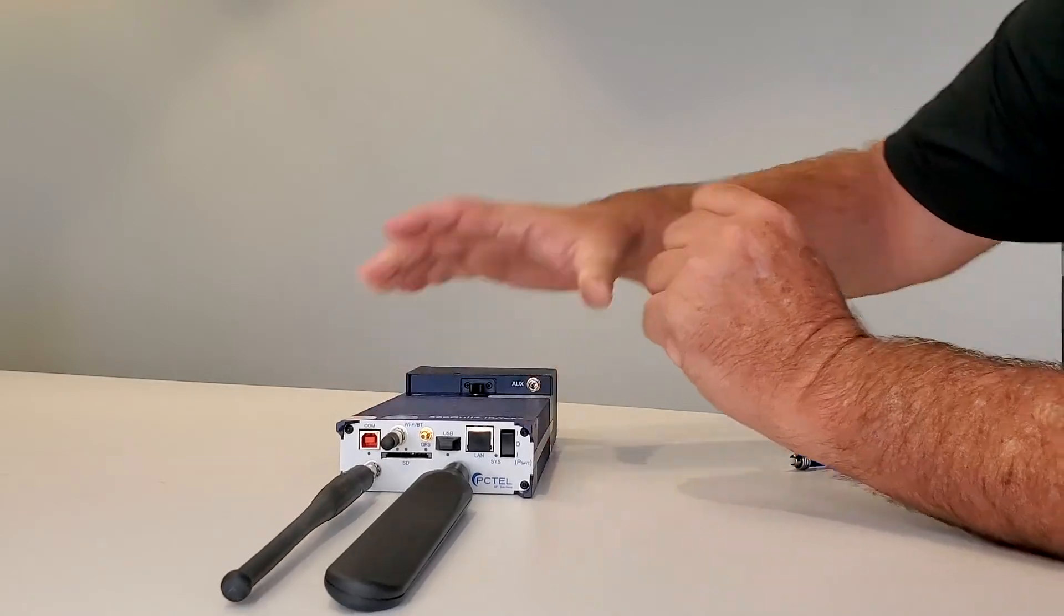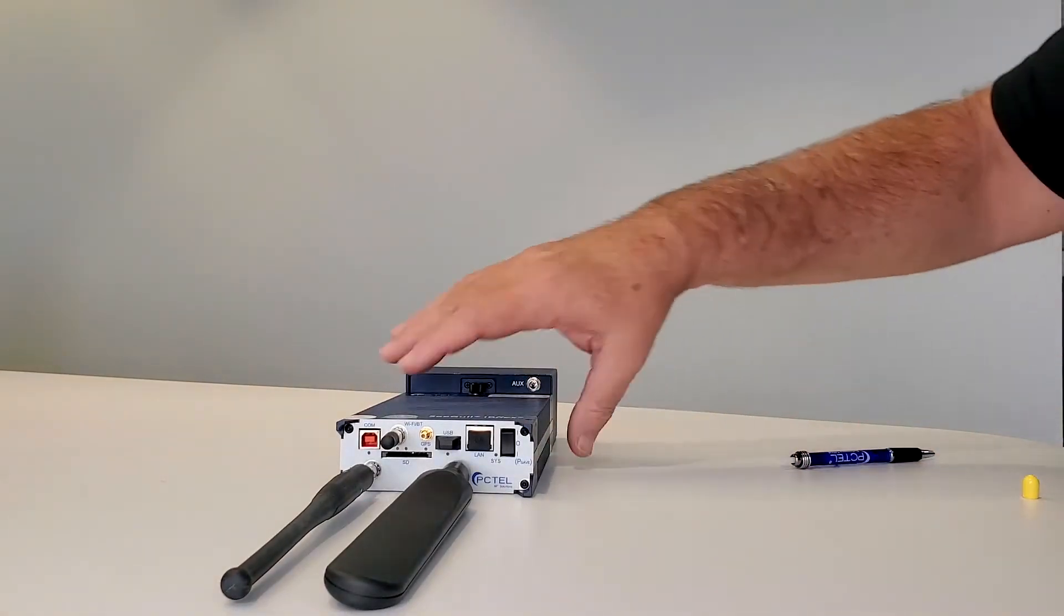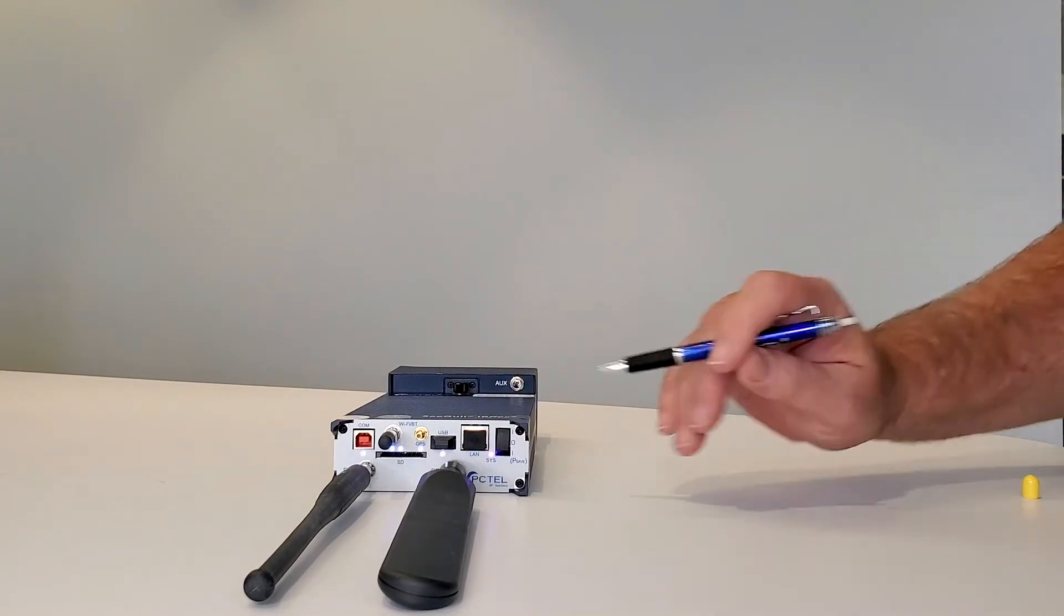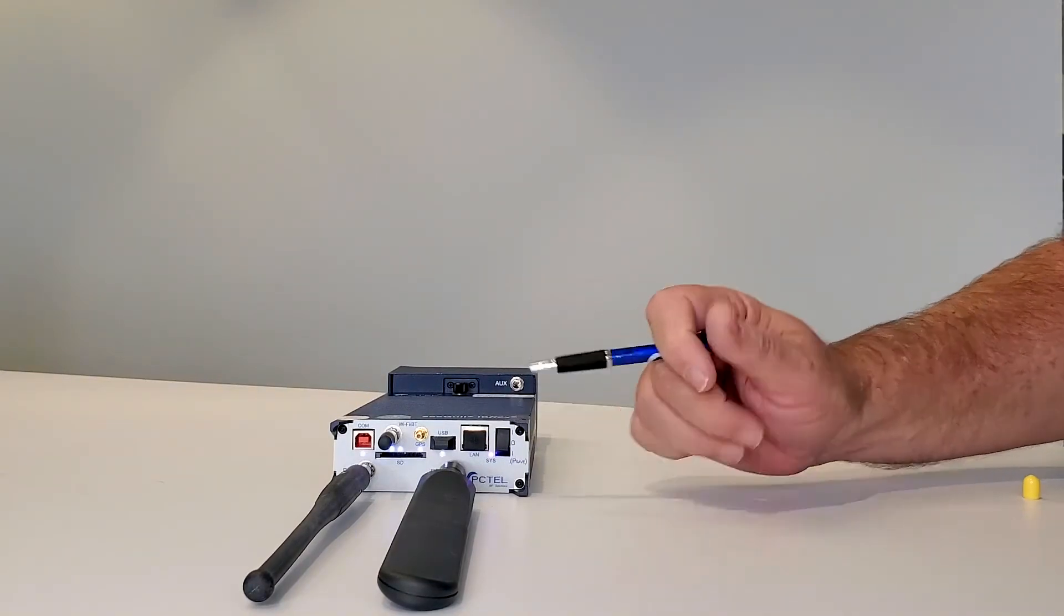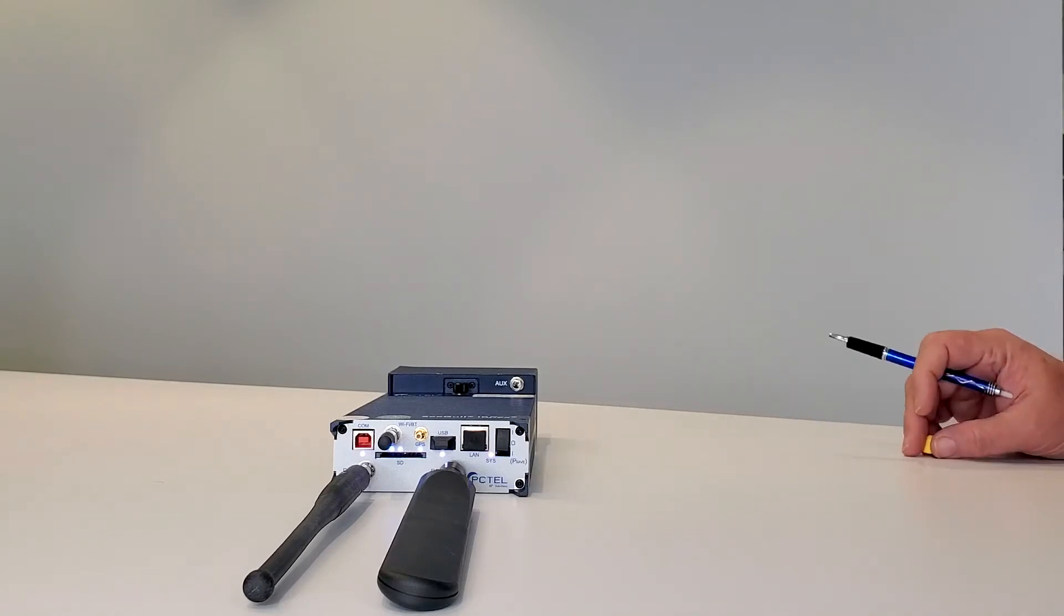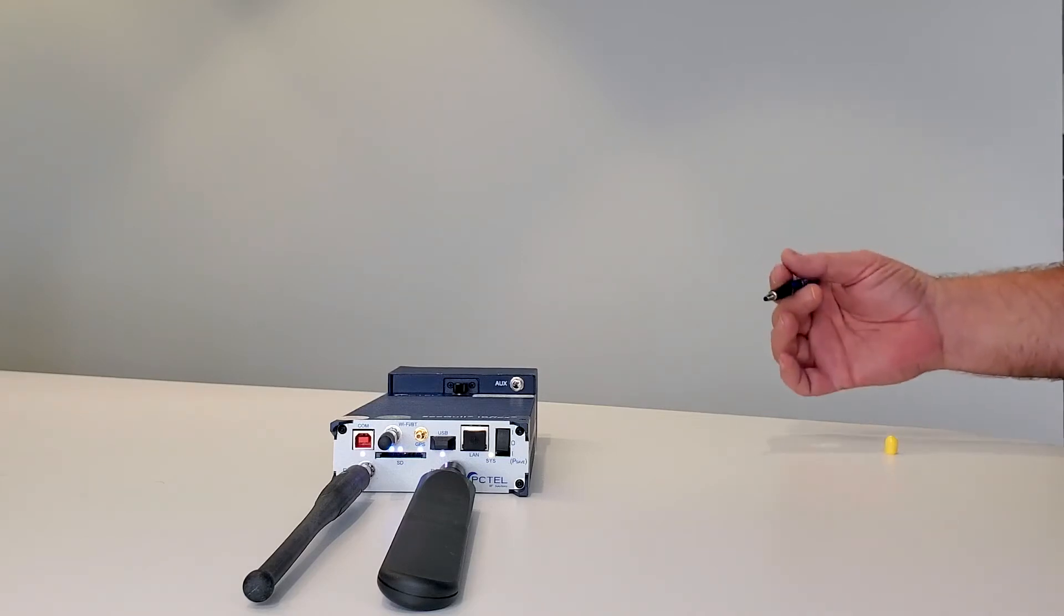And once we have our antennas on our scanner, we can power it up. Now this power switch actually has three positions. All the way up puts it in full power. In the middle is off, and there's also a power save mode. Power save mode does give you extended battery life with the trade-off of slowing down your scanner.